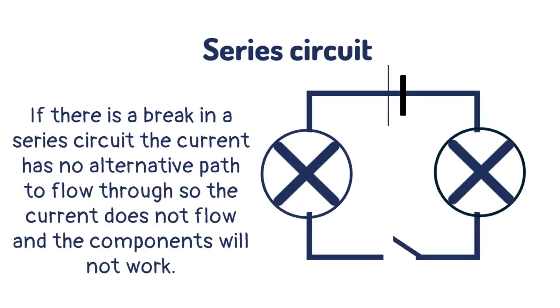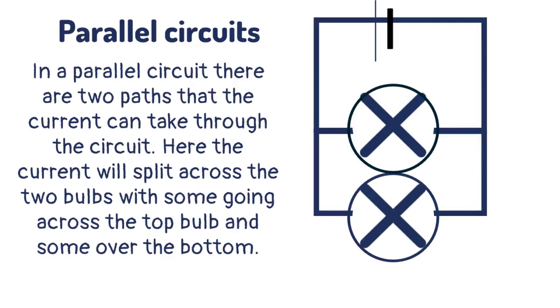If there is a break in a series circuit, the current has no alternative path to flow through, so the current does not flow and the components will not work.